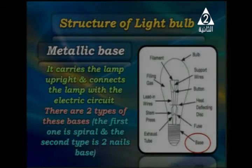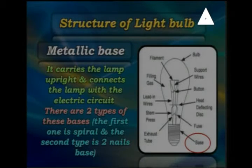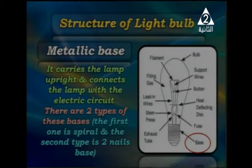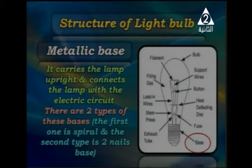In the diagram, we can see the spiral base and the nail base, found on the sides of the base, with the lead piece at the last part of the spiral base.